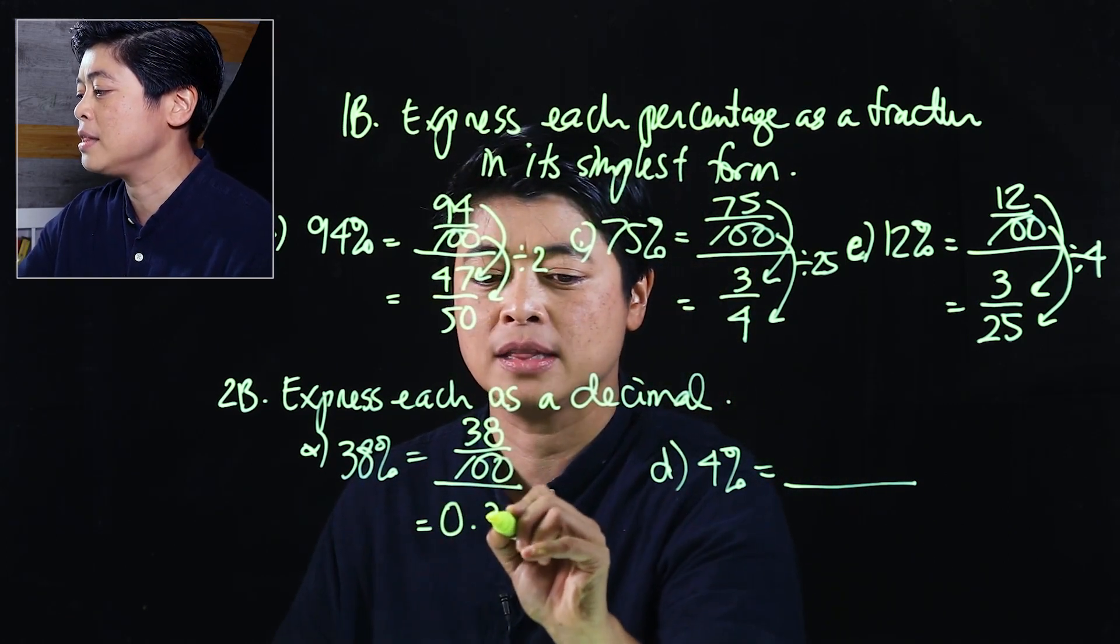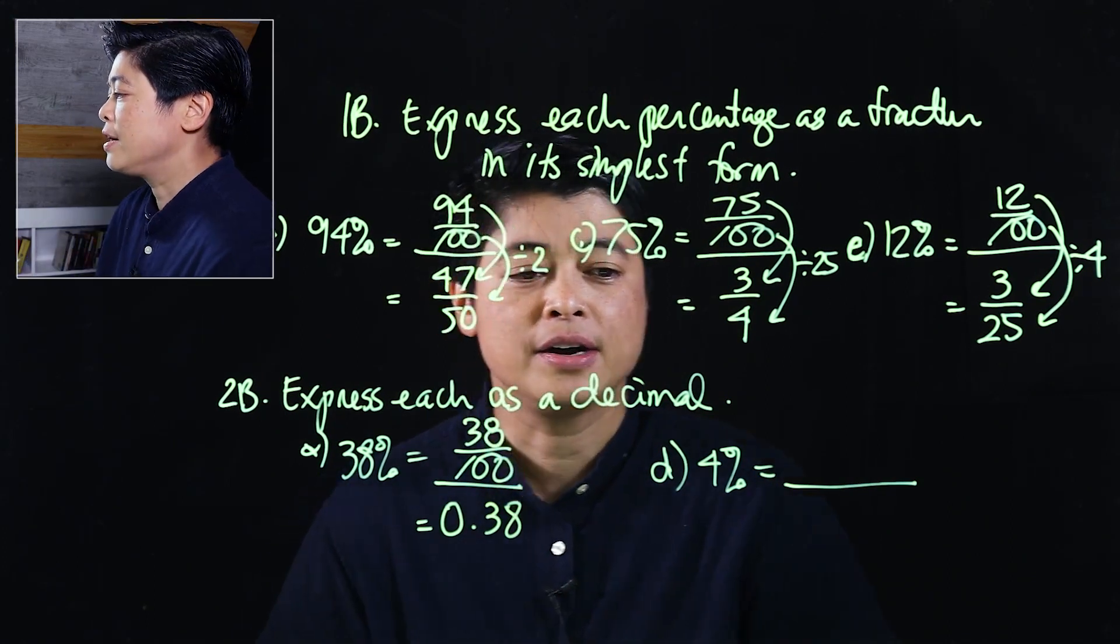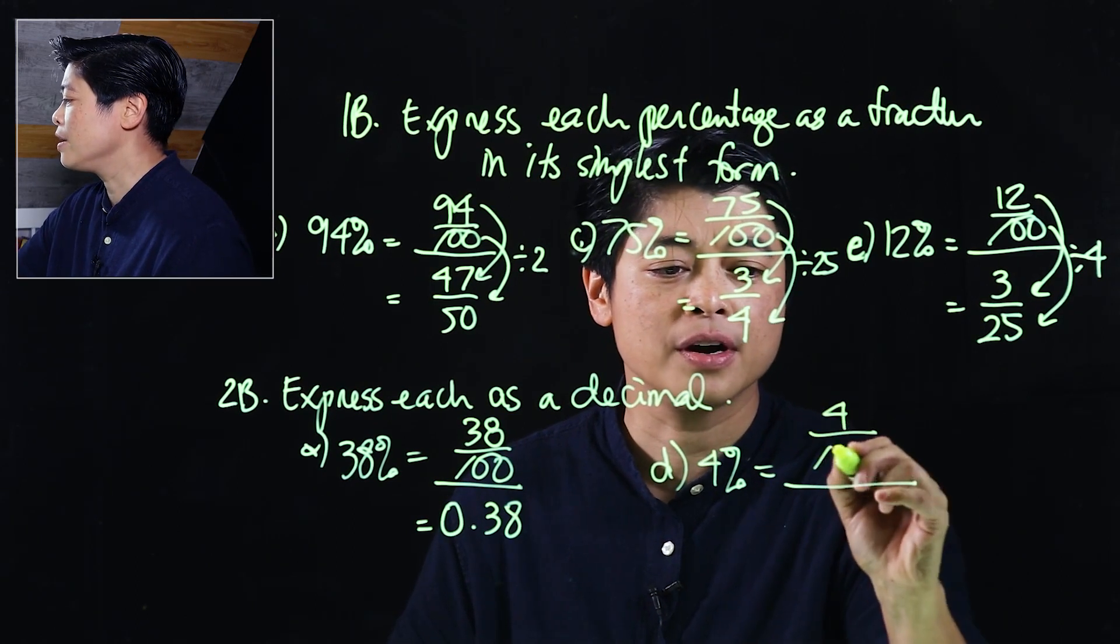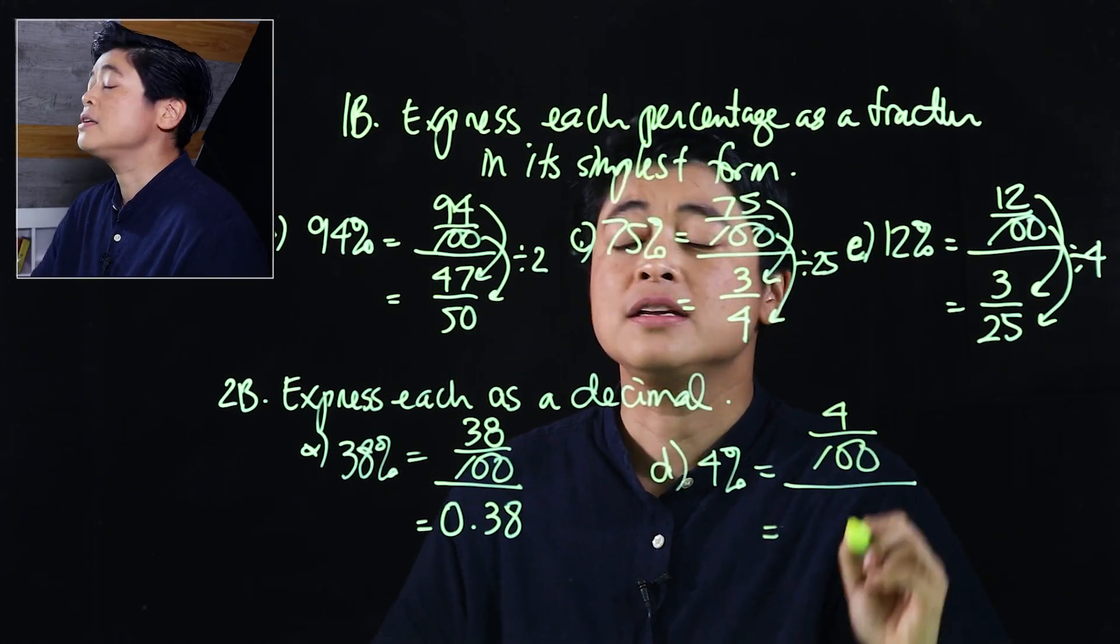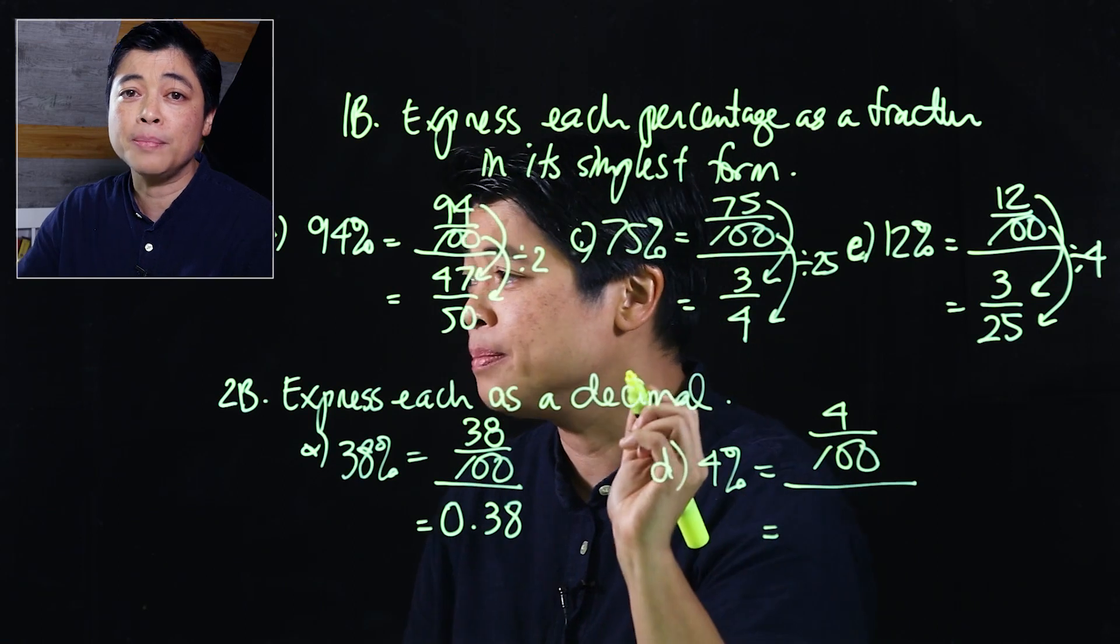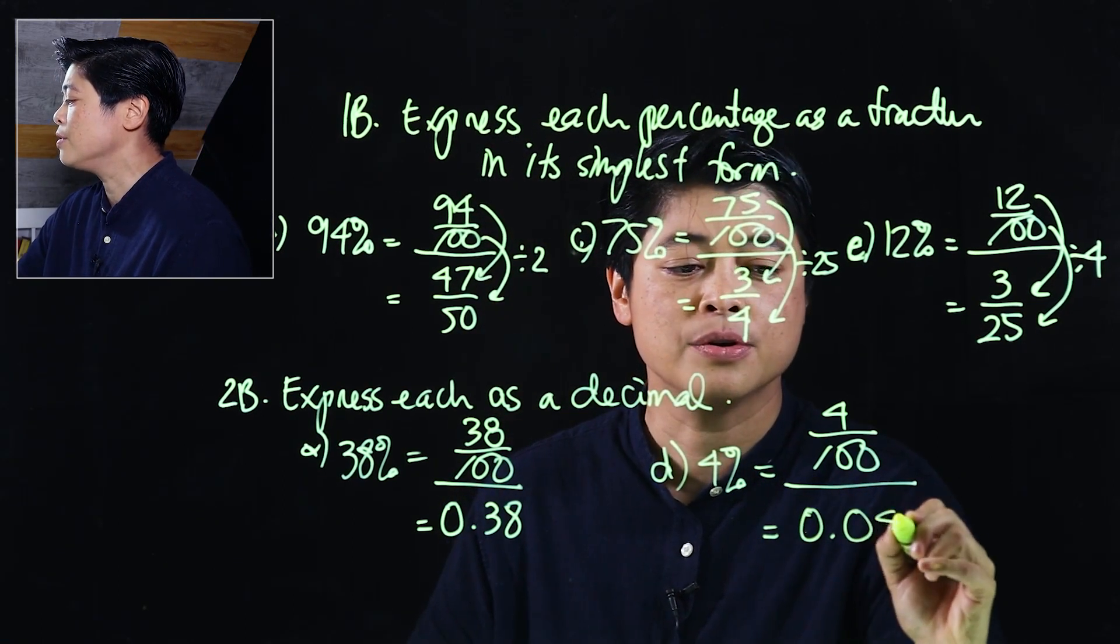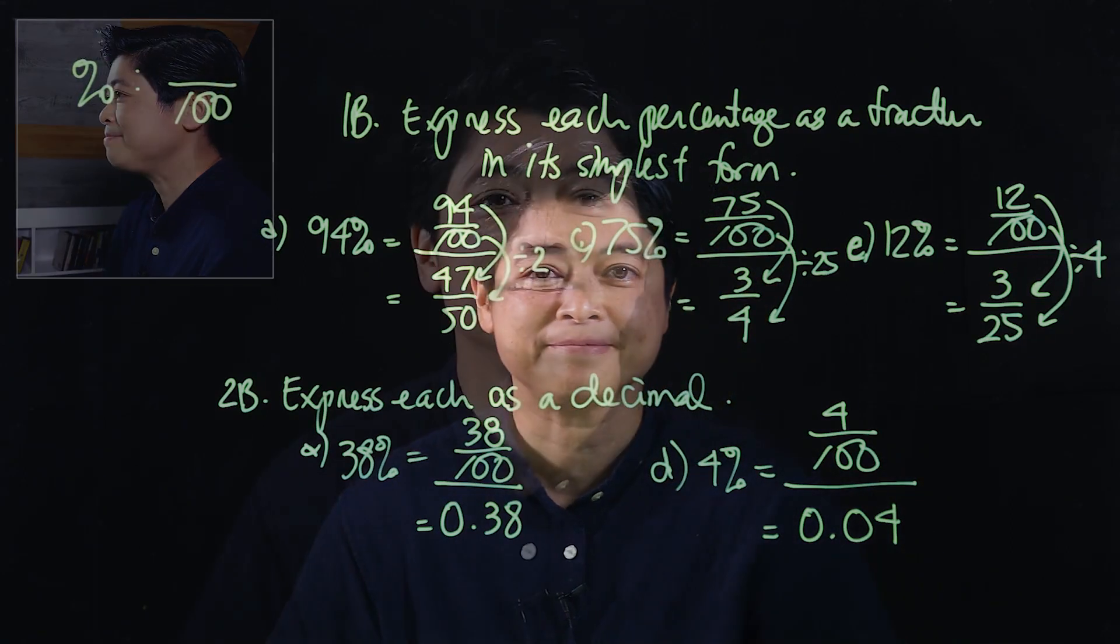And finally, 4% is 4 over 100, which means moving the decimal place two places to the left we will get 0.04. That concludes lesson 2 of chapter 10. See you in the next lesson.